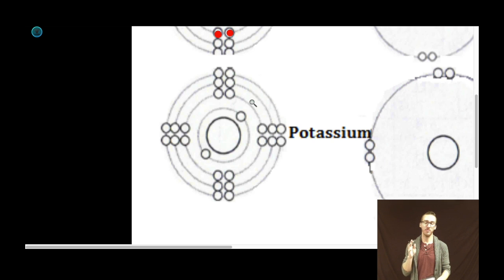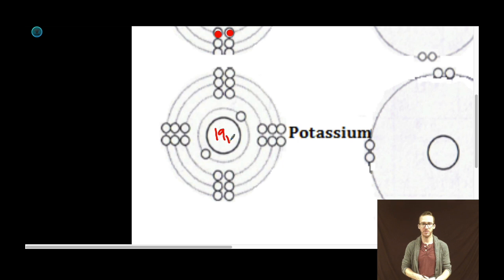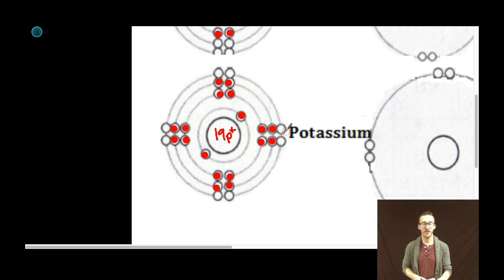Let's now do the same thing with potassium. Potassium doesn't have 11 protons — it has 19. So 19 protons in the nucleus of an atom of potassium. It's also going to have 19 negative electrons: the first two in the first main energy level, the next eight in the second, the next eight in the third main energy level, and its 19th and final electron in the fourth main energy level.